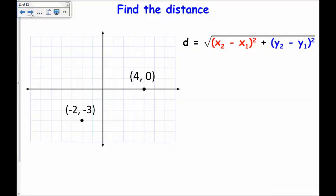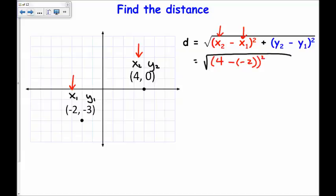Here is an example using the distance formula. First, I will label x1 and y1 and x2 and y2. First, I have x2 minus x1. x2 is here and x1 is here. x2 is 4, x1 is negative 2. And y2 is here and y1 is here.